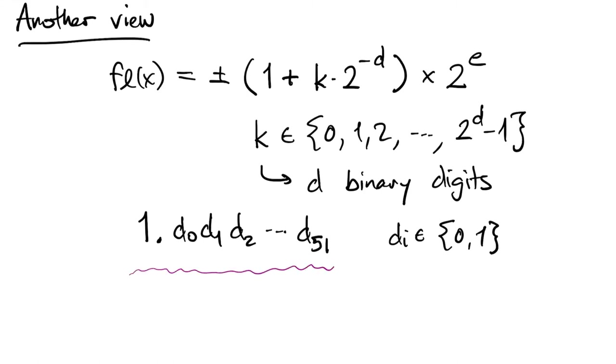Each of those represents a different negative power of 2. So, 1 half, 1 quarter, 1 eighth, and so on. So, if we think in binary, we have 52 binary significant digits.